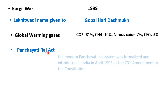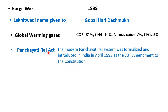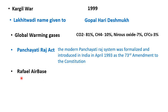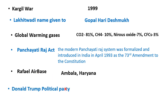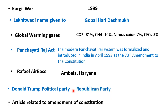Panchayati Raj Act कब आया था? Modern panchayati raj system India में 1993 में 73rd Constitutional Amendment के द्वारा formalize हुआ था। Rafale airbase — जब Rafale India में आया था, उसका स्वागत किस airbase पर किया गया था? Ambala में, Haryana. Donald Trump की political party कौन सी है? Republican Party. Article related to amendment of constitution — कौन सा article constitution में amendment करने के लिए है? Article 368.